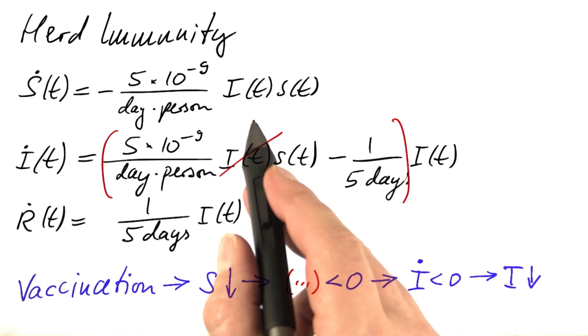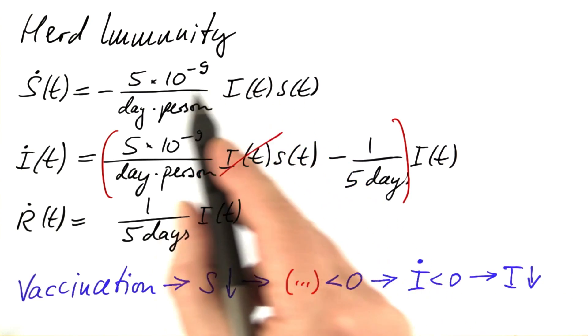If the rate of change is negative, this means the number of infectious persons is decreasing.